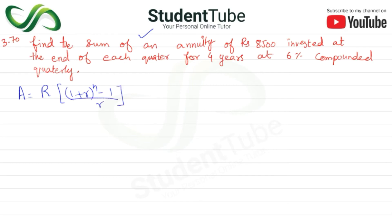r equals i/m. We have 0.06 compounded quarterly, that means divided by 4, so we have 0.015. n equals m multiplied by t, so m is 4 and t is 4.